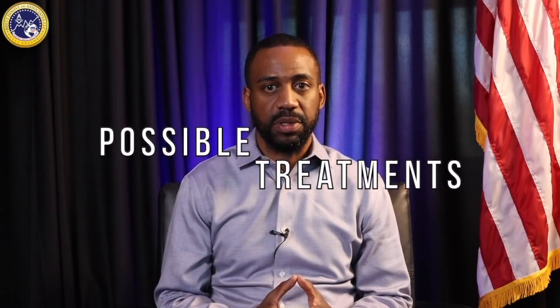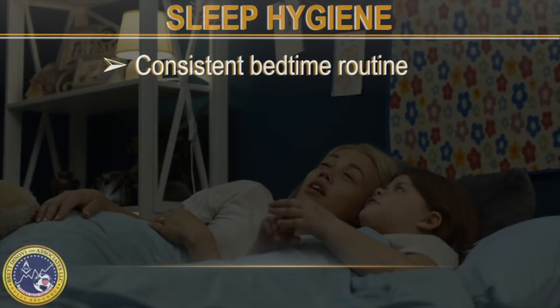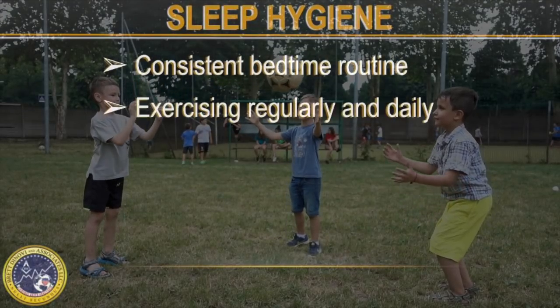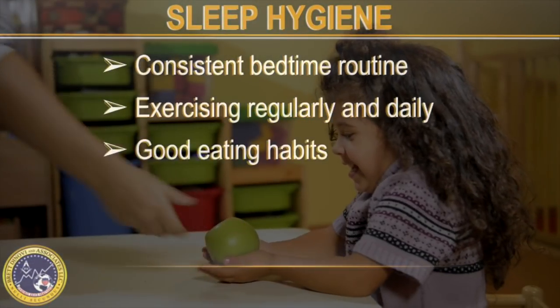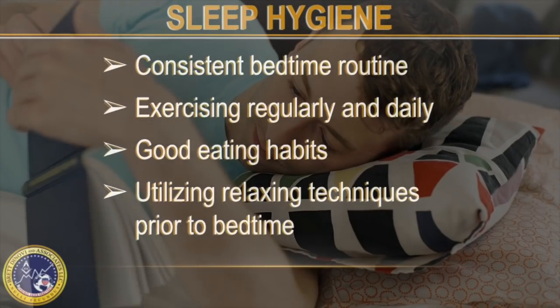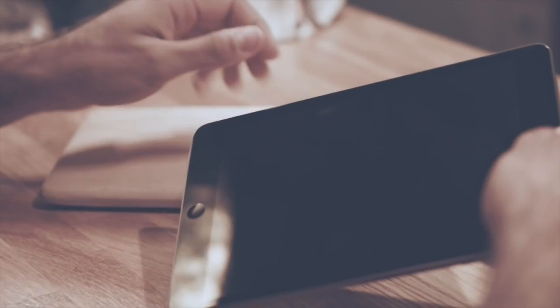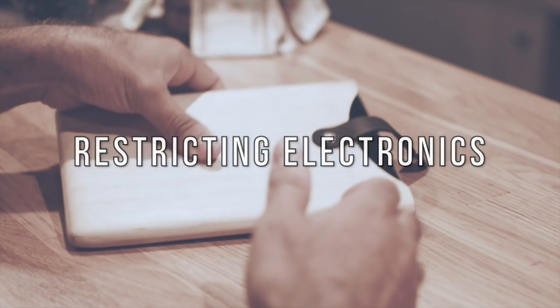Now that we've talked about identifying sleep issues, let's talk about some possible treatments. The first and most common treatment is sleep hygiene. That includes things like making sure the person with ASD has a consistent bedtime routine, going to bed at about the same time each evening, getting good exercise and movement throughout the day, maintaining good eating habits, and using relaxing techniques prior to bedtime. In my own practice, I've noticed that restricting electronic devices prior to bedtime is also a big help.